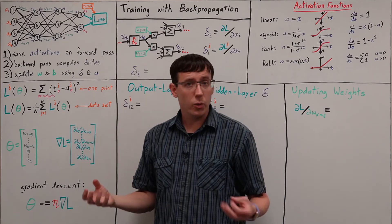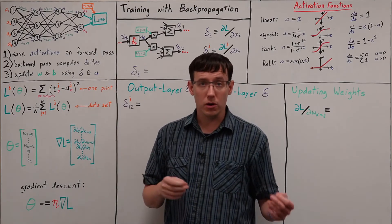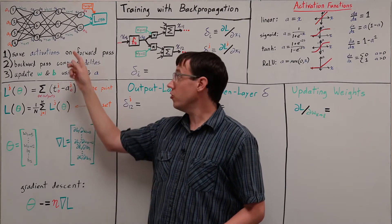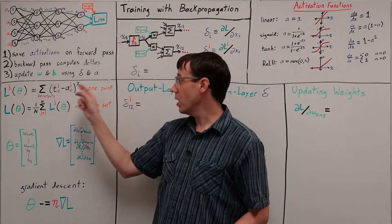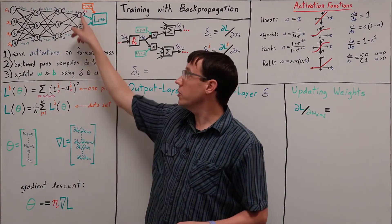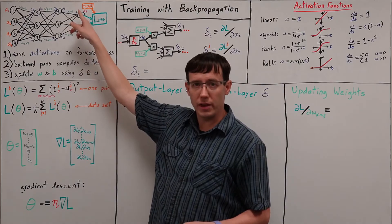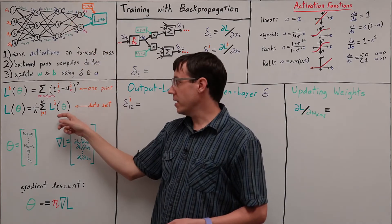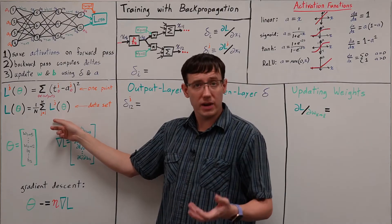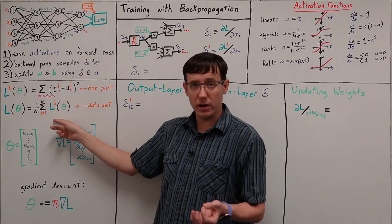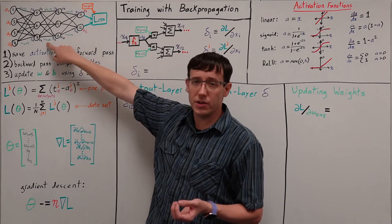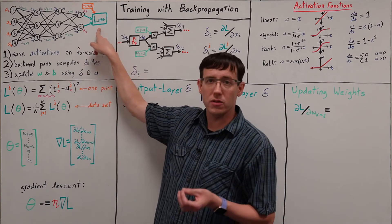In the last video, we defined a neural network loss function where, for each data point and each of the network's outputs, we computed a squared error. We then summed those squared errors over the output nodes, and averaged across all of the points in the data set. Our task now, in performing gradient descent, is to determine how the weights of the network influence that loss.